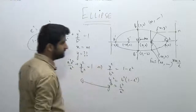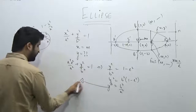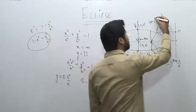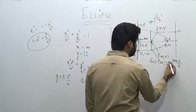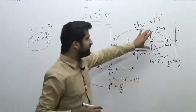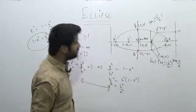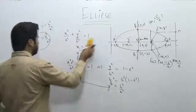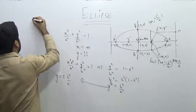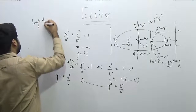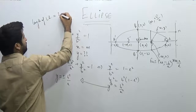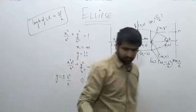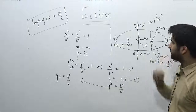So y² = b⁴ / a², which gives y = ± b² / a. The two endpoints of the latus rectum are (ae, b²/a) and (ae, −b²/a). Therefore the length of the latus rectum is 2 × b²/a. The length of the latus rectum in the case of this ellipse comes out to be 2b²/a. This is a very important result to remember.